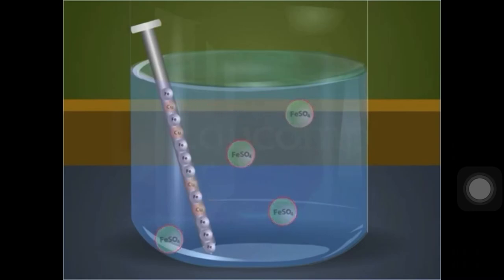The displaced copper then deposits on the iron nails in the form of a reddish brown coating. Since in this reaction, a more reactive metal iron displaces a less reactive metal copper from its compound, it is a displacement reaction.